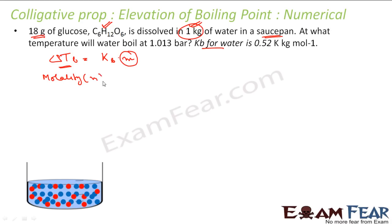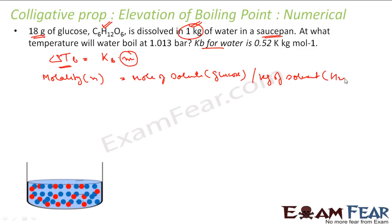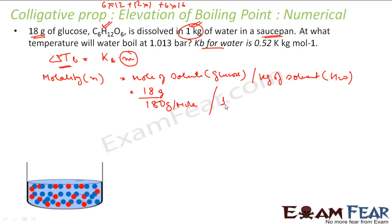Let's find molality first. Molality m = moles of solute (glucose) per kg of solvent. Moles = mass / molar mass. We have 18 grams of glucose; the molar mass of glucose C₆H₁₂O₆ is 6×12 + 12×1 + 6×16 = 180 g/mol. Divided by 1 kg of water, we get 18/180 = 0.1 mol/kg, so molality = 0.1 m.